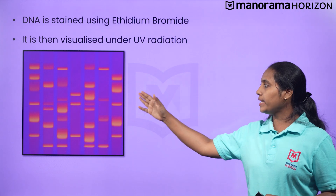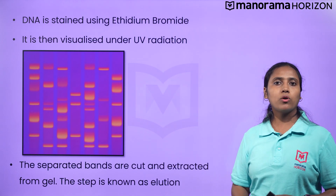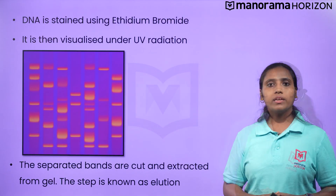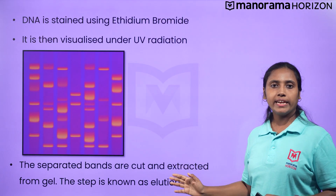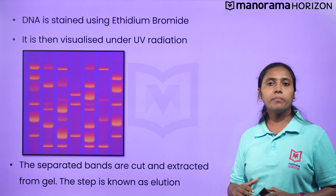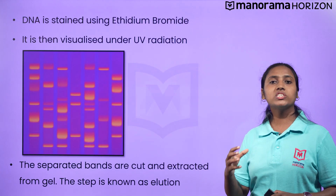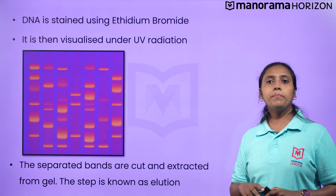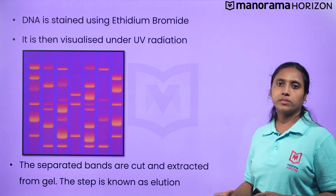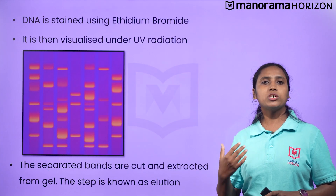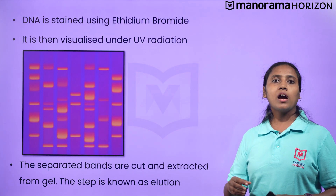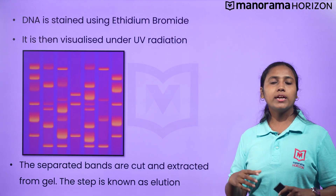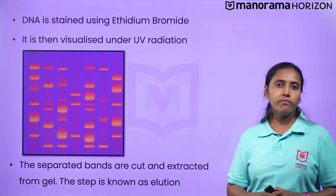We can see bright orange colored bands of DNA in ethidium bromide stained gel. The separated bands of DNA are cut out from the agarose gel and extracted from the gel piece. This step is known as elution. The DNA fragments purified in this way are used in constructing recombinant DNA by joining them with cloning vectors.